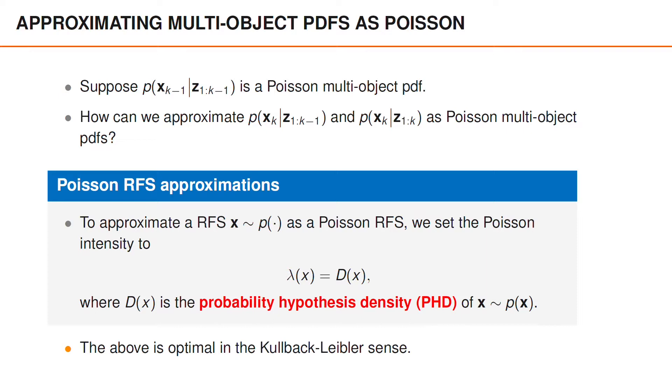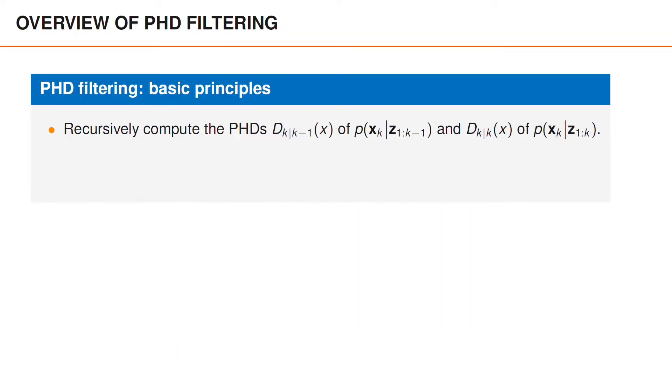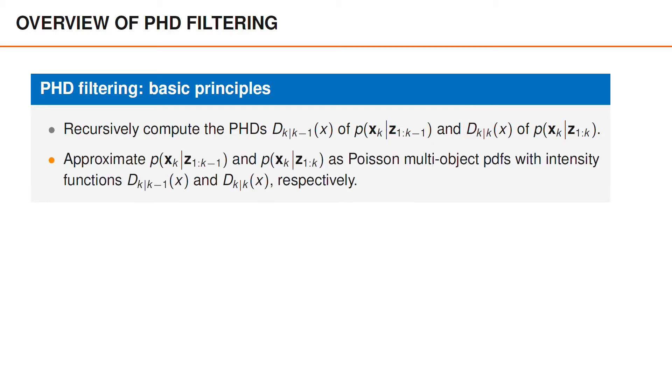To perform PHD filtering, we therefore recursively compute the PHD of the predicted density, denoted d_{k|k-1}(x), and the PHD of the posterior density, d_{k|k}(x). We then recursively approximate the predicted distribution and the posterior distribution as Poisson point processes, with the corresponding PHD as its intensity function. According to what we learned on the previous slide, this is the best choice of intensity function in the Kullback-Leibler sense.